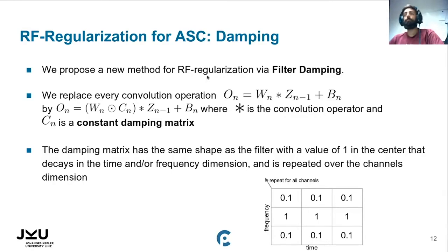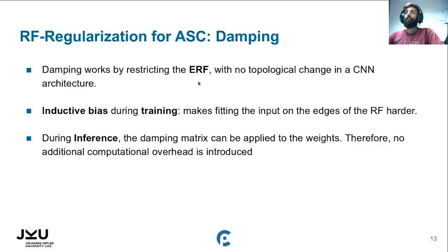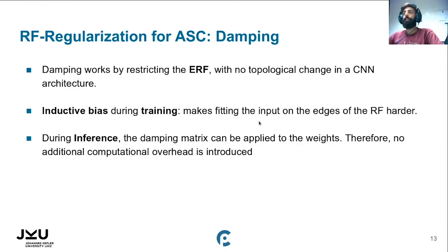This brings us to our new Receptive Field regularization method: Filter Damping. Filter Damping works by multiplying the weights by a constant damping matrix. This matrix is constant — it is not learned during training. It has the same shape as the filter, with a value of 1 in the center that decays over the frequency dimension, the time dimension, or both dimensions, repeated for all channels. Damping restricts the ERF with no topological change in the CNN — we don't change filter sizes or introduce pooling layers. We just multiply the filters by a constant matrix before applying convolution, acting as an inductive bias during training that makes fitting inputs outside the center of the Receptive Field harder. During inference, you can simply multiply the damping matrix with the weights, so no additional computational overhead is introduced.